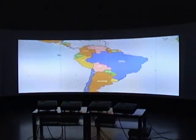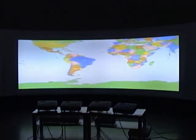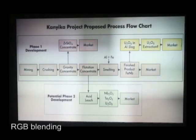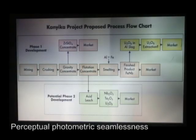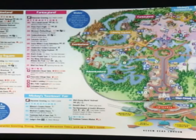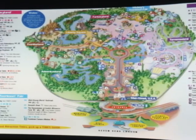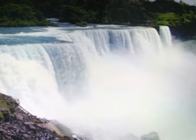Unlike previous works, our smooth gamut morphing allows us to project flat colors without any artifacts. Here is a comparison of our method with simple RGB blending and with the perceptual photometric seamlessness method described by Majumder and Stevens in 2005. Our method has realized, for the first time, a truly seamless tiled display whose constituent projectors cannot be detected by observers.